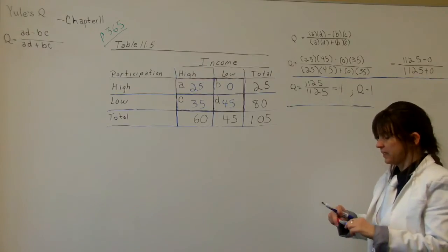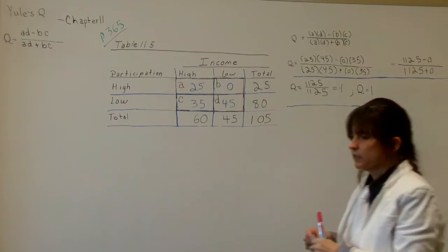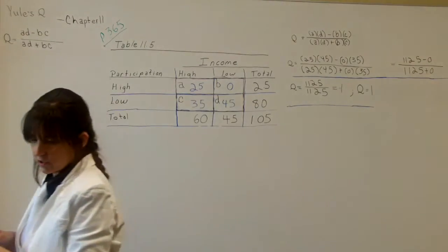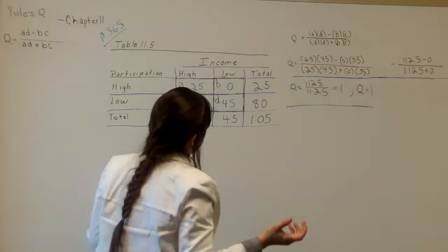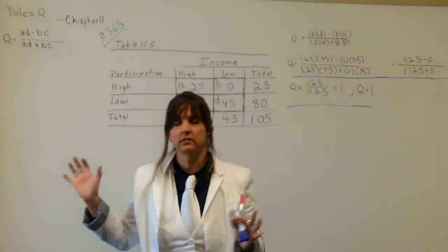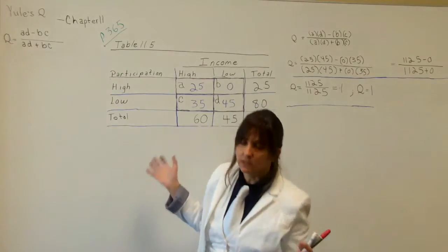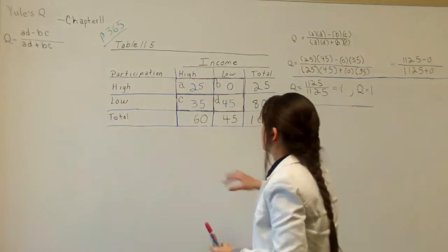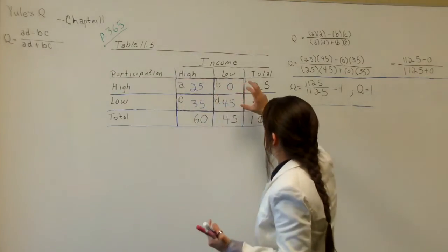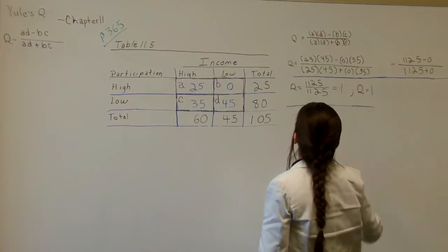That's saying there is a perfect correlation. Because remember, the measures of association range between 0, meaning there's no correlation, to 1, meaning it's perfect, or negative 1, meaning it's perfectly negative. But we can tell looking at the data, this doesn't look perfect. Something's up. This doesn't tell us enough.